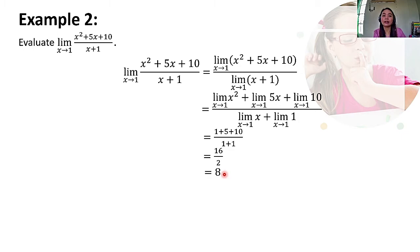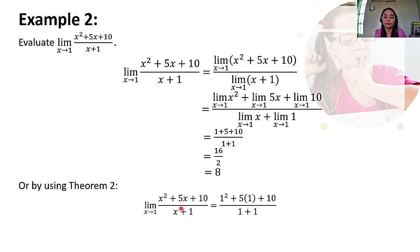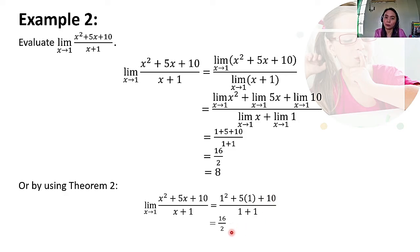Alternatively, using theorem number 2, we use direct substitution: substitute 1 into all X's in the function, giving 1 squared plus 5 times 1 plus 10 all over 1 plus 1. That is 1 plus 5 plus 10 over 2, which equals 16 over 2, equal to 8 as well.